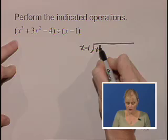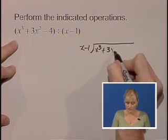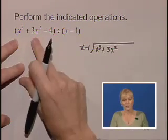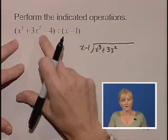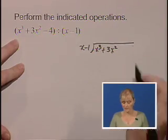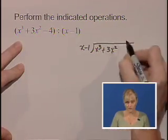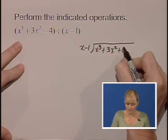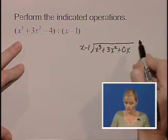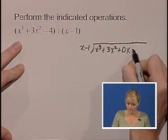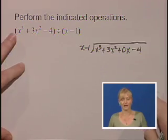We're going to place x cubed plus 3x squared. Now notice in our original polynomial we don't have an x term, but we need to make sure we hold the place for that under our division bar. So we're going to place 0x under our division bar to hold that place and make sure our constant minus 4 is there.